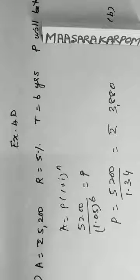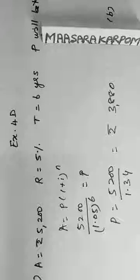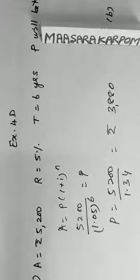Amount 5200, rate of interest 5%, term 6 years. Principle, get it. So, compound interest formula, you will get a principle as 3880.